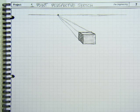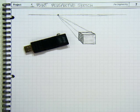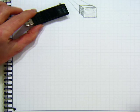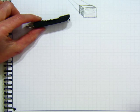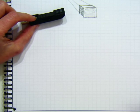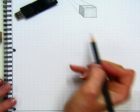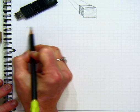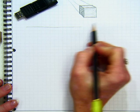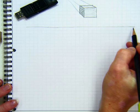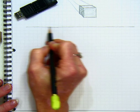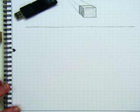Now, it gets a little more difficult whenever we try to make an actual object. So let's try to draw my flash drive here in one point perspective. So again, what I'm going to do is I'm going to draw my horizon line.